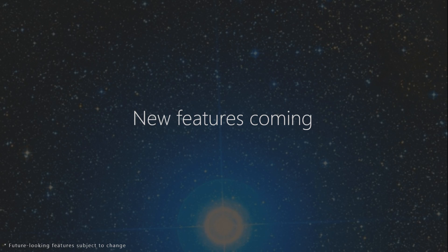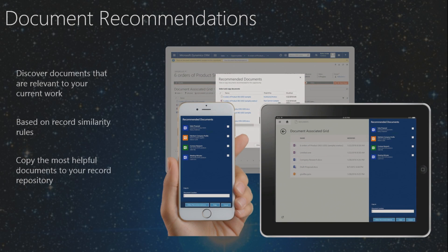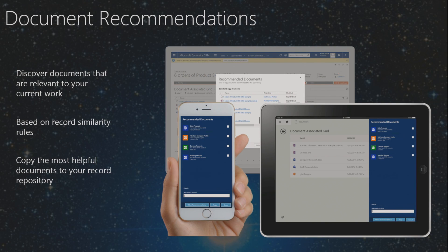I'll show you the demo of document recommendations in our mobile app. In document recommendations, we look at similarity between different entity records — similarity that a particular opportunity has with other existing opportunities, whether based on account, product, industry, or geo information. If it is captured in any attributes, you can define similarity rules. Using those similarity rules, you can bring in documents from other opportunities as recommendations for the current opportunity. With the fall release, you'll be able to copy those documents over. So if you're working on a proposal and want to find a corresponding proposal done for that account before, you can bring that over.